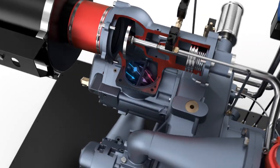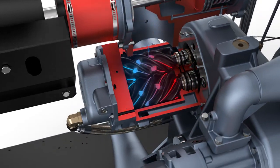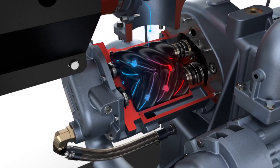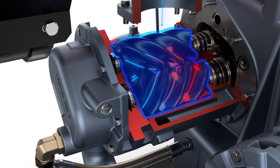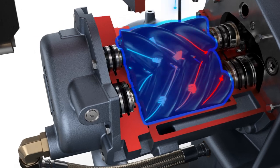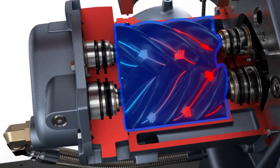Within the air end are two interlocking PTFE-coated rotors, machined to micron precision. As they rotate, the space between them gradually decreases, trapping the incoming air and steadily compressing it.